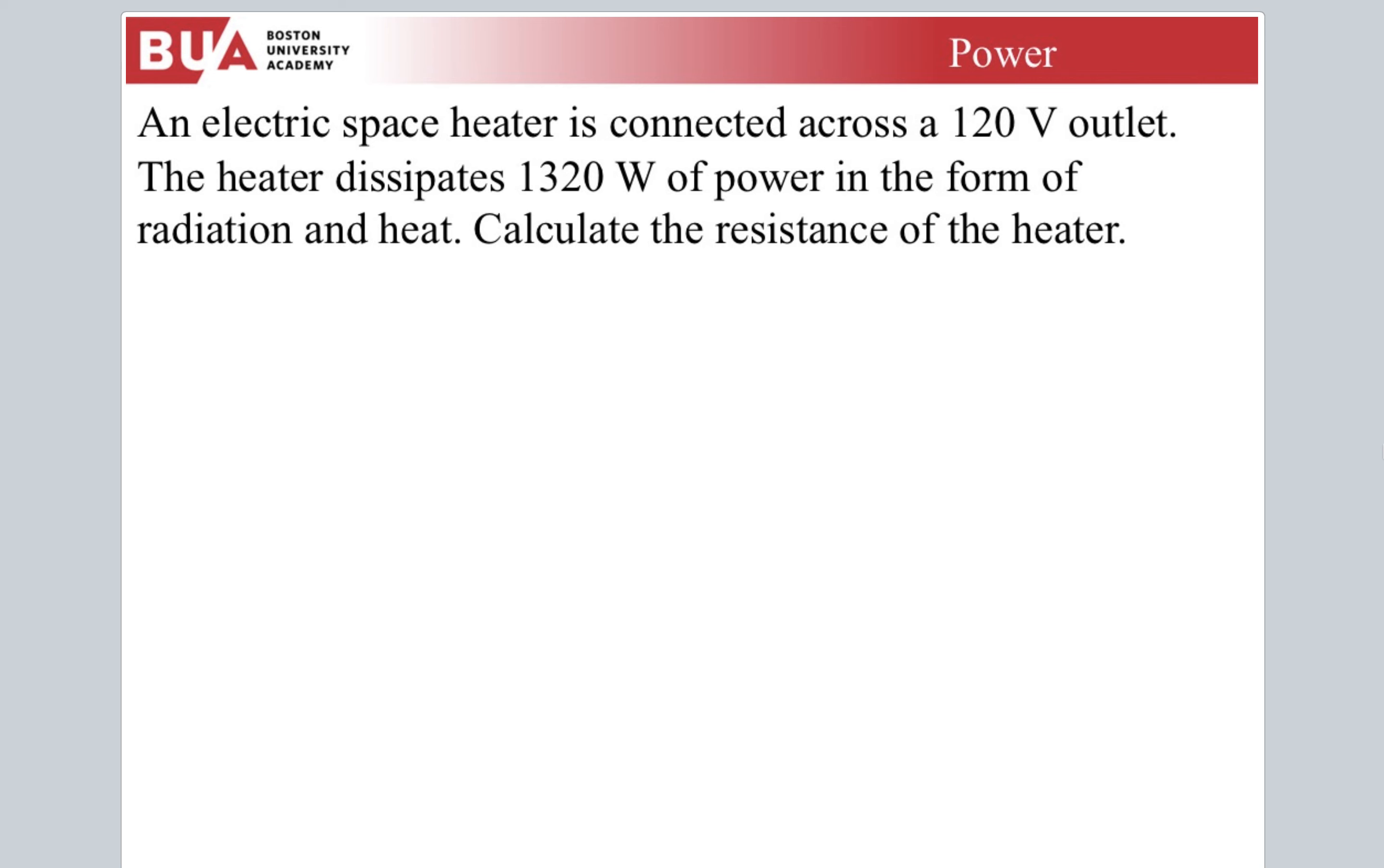Let's do some problems. An electric space heater is connected across a 120 volt outlet. The heater dissipates 1320 watts of power in the form of radiation and heat. Calculate the resistance of the heater. I want to say too that this is a pure conversion thing here. An electric heater is taking electric energy and just purely converting it to heat. In a lot of sense we would think it's wasting that energy, but we need heat, so it's not. So what do we do here?